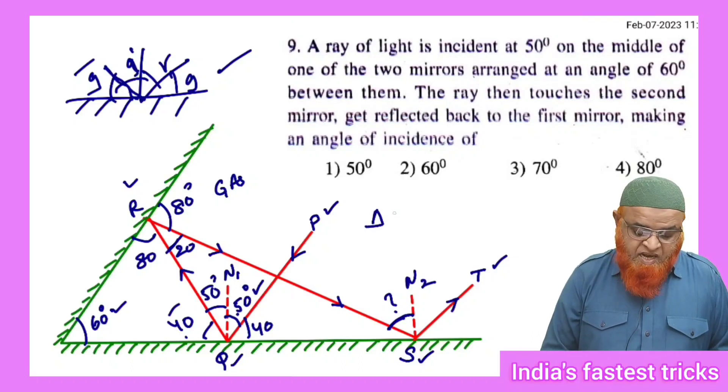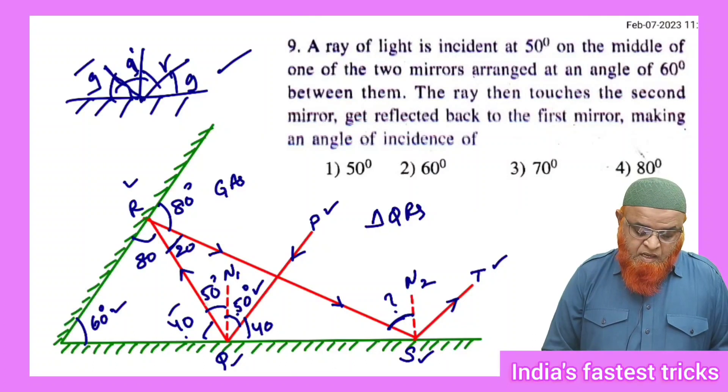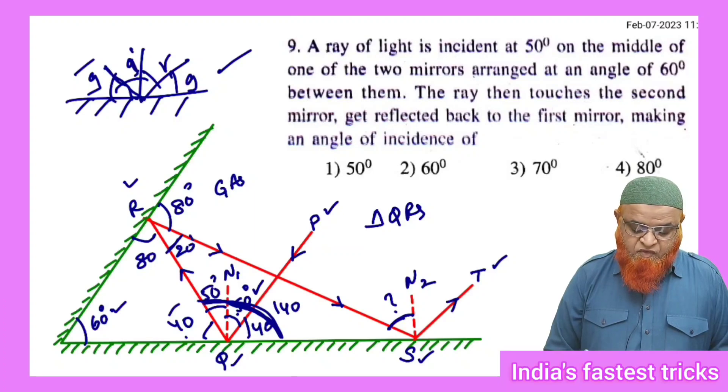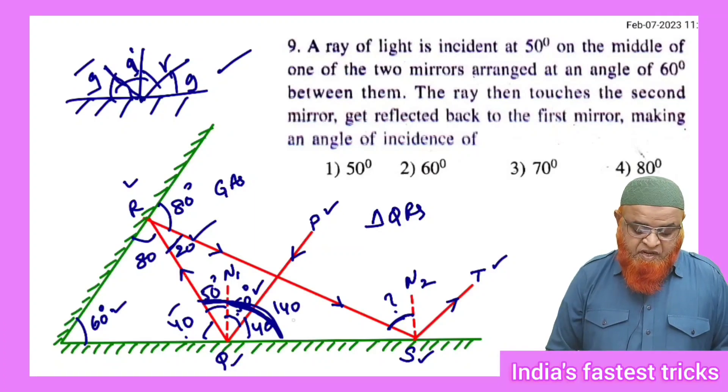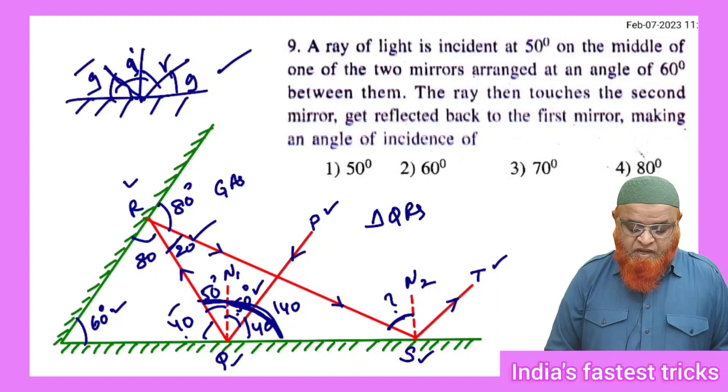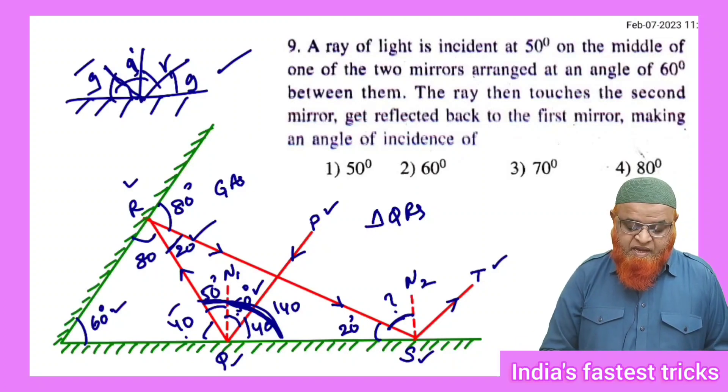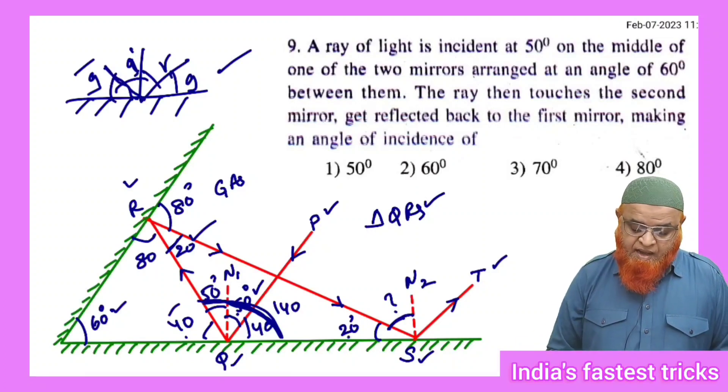Therefore in triangle QRS, this total triangle is going to be 140. This is going to be 20, so 20 plus 140 is 160. That means this is going to be 20 degrees here, because 160 plus 20 is 180 in triangle QRS.